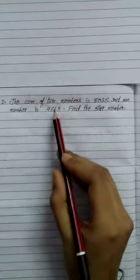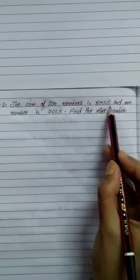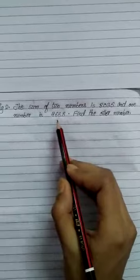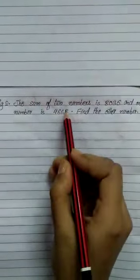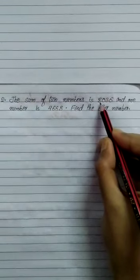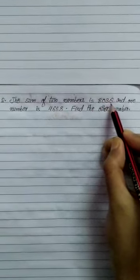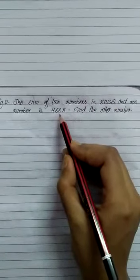Let's see the second example. The sum of two numbers is 8,036 and one number is 4,668. Find the other number. First, understand what the question is. You know what 'sum' means — when we add two numbers, the answer is called the sum. So by adding two numbers the sum is 8,036, and one of them is 4,668. We have to find the other number — so we have to subtract.